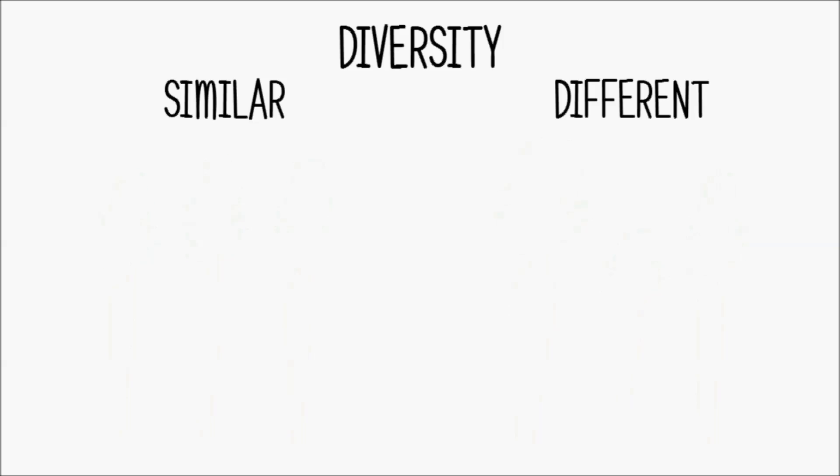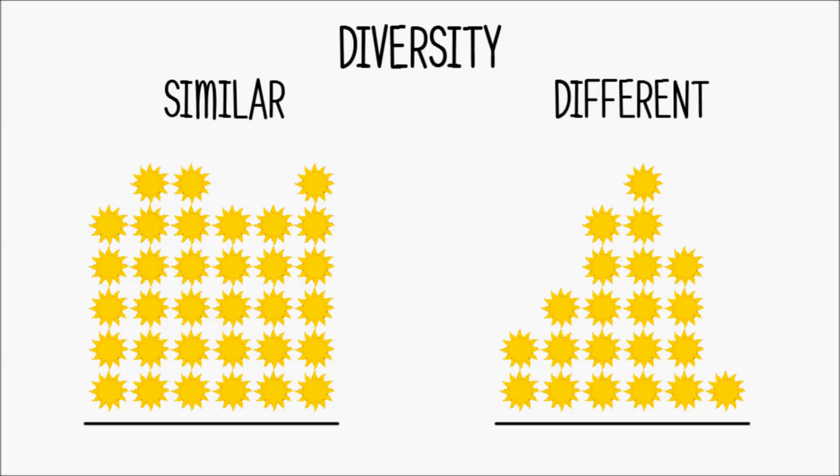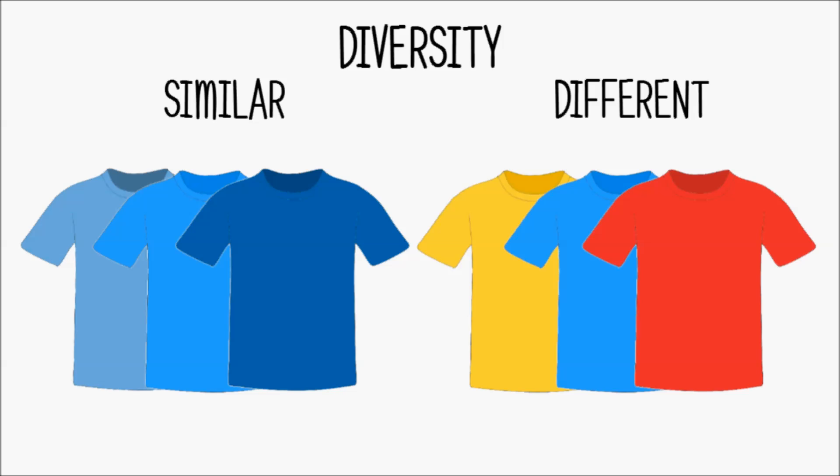Or in one geographic region we might find a relatively similar number of daily hours of sunshine across the year, whereas in another region there might be quite a lot of fluctuation. And even colors can be very similar or very different.